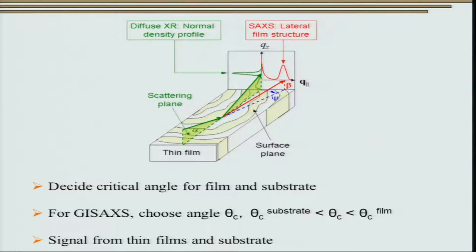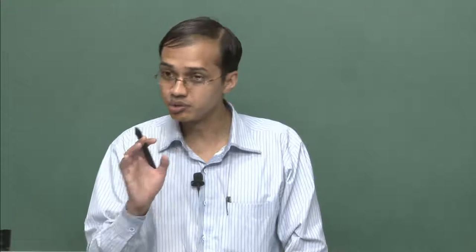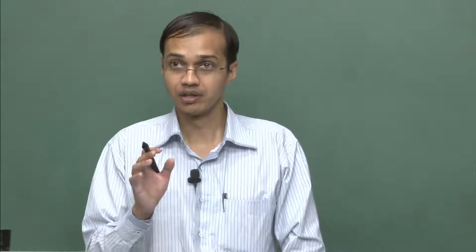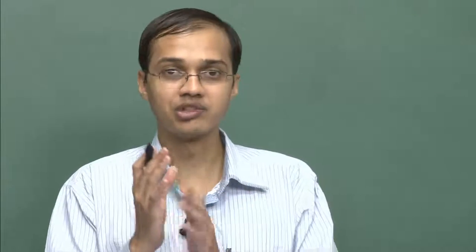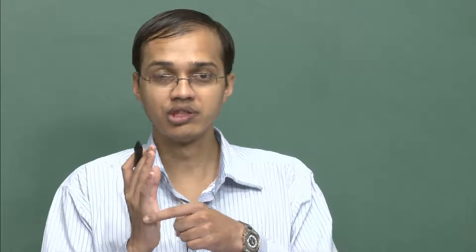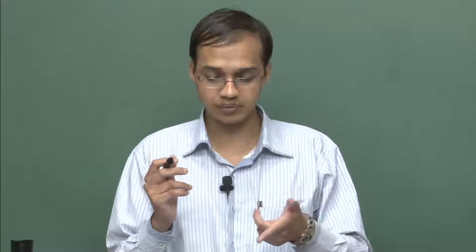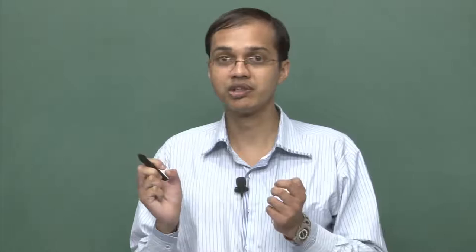So most of the signal comes from the thin film while there is no refraction occurring in the substrate. This is very important for implantation studies. During implantation, heavy ions collide with the substrate causing damage that varies with depth from the surface. If you want to study subsurface damage due to implantation, you can vary the incident angle θ to get information from different depths. This is one parameter routinely used to control the extent of information obtained during grazing incidence small angle X-ray scattering.